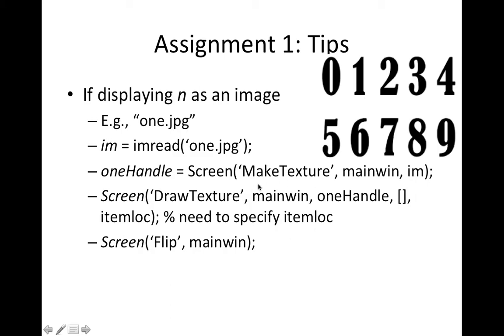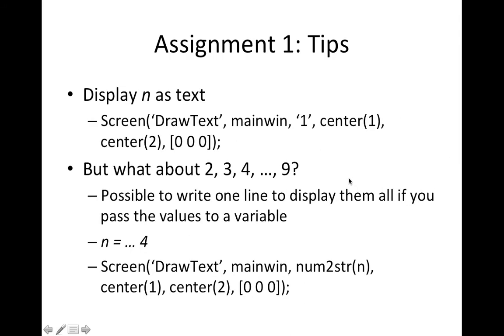So with imread, you're going to make a texture, draw the texture and flip it on the screen. For this particular experiment though, I don't recommend displaying the digits as images. The reason is because you would then have to load in the eight digits I wanted you to show participants. What you can do instead is to rely on the DrawText function, which you already see in the choice reaction time task.